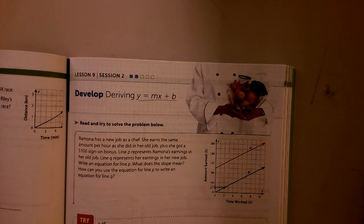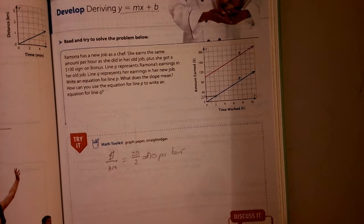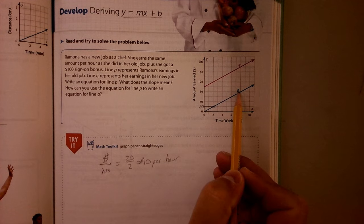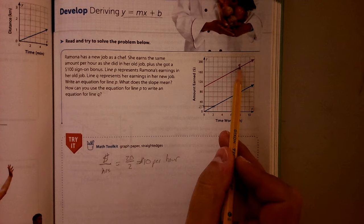So we've got Ramona here, and she has a new job as a chef. She earns the same amount per hour, but got a $100 sign-on bonus. I'm sorry about the lighting, it's just going to be off a little bit. So we've got line P here, this blue line, and we've got line Q. This is her old job, this is her new job.